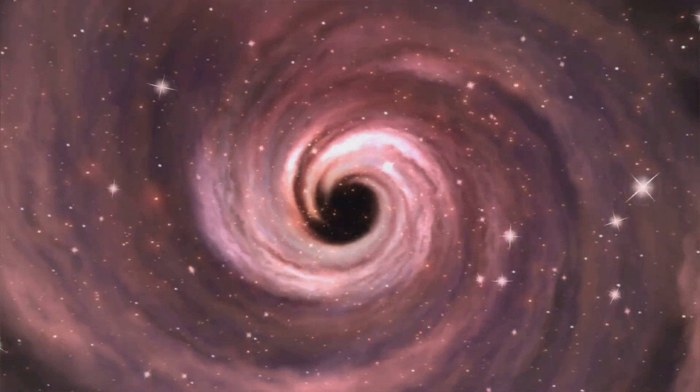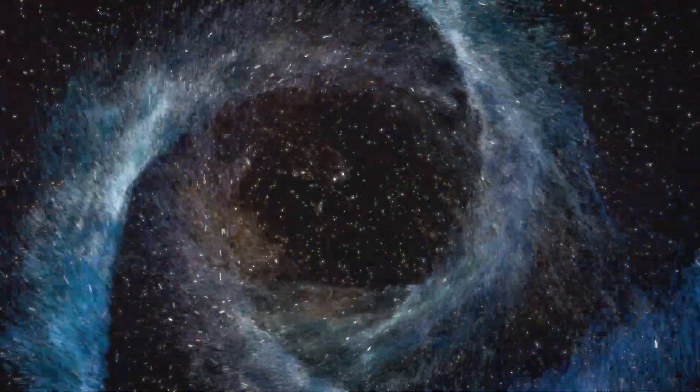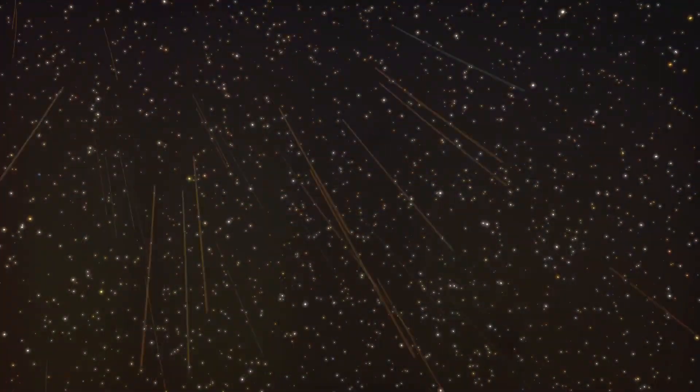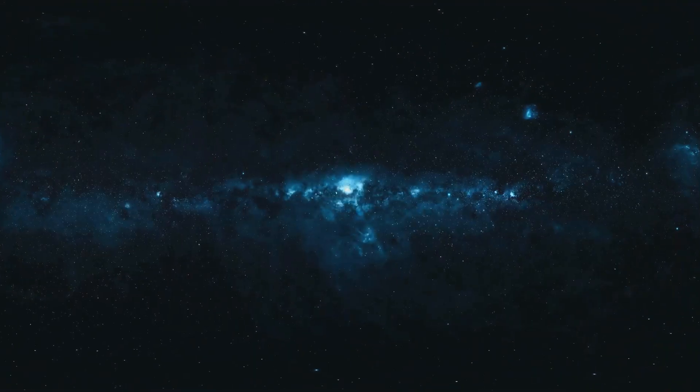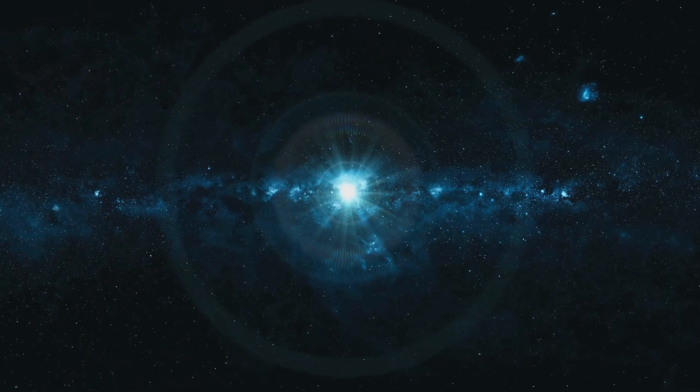The event horizon of a black hole, the point beyond which nothing can escape its gravitational pull, might be large compared to everyday objects, but it's quite small on a cosmic scale. This chapter will clarify the difference between mass and volume and emphasize the compact nature of these fascinating objects.